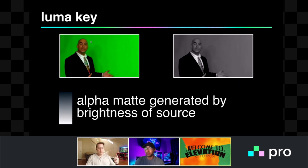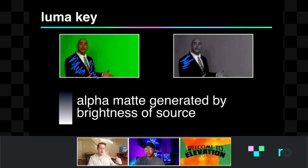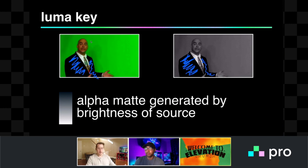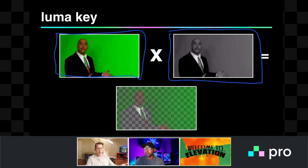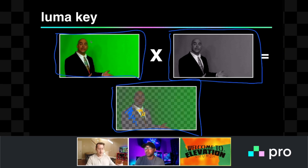Then we've got a luma key. A luma key is going to generate this alpha matte based on the brightness of whatever your fill is. For instance, this guy's wearing a black jacket — that's not very bright, that's a darker color. That's going to generate the luma matte and make his jacket fully transparent. And then his shirt is white — that luma matte is going to create white in that area and make it fully opaque. What you end up with is your fill times your luma matte, where his jacket is fully transparent and his shirt is fully opaque. That's the idea of a luma key.